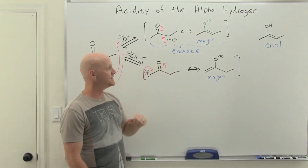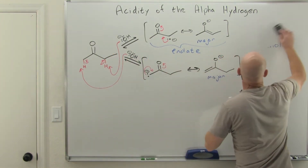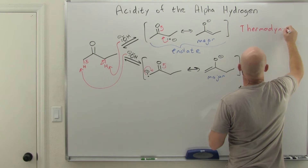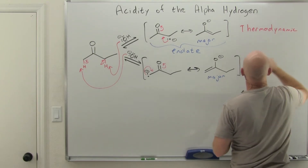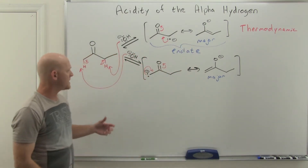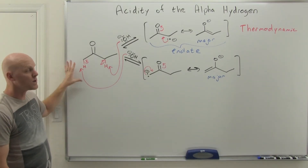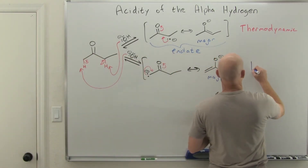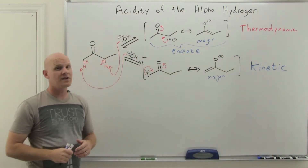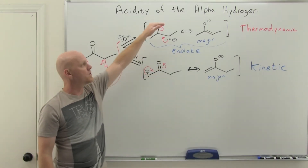The more stable enolate is referred to as the thermodynamic enolate. The less stable one — formed by deprotonating the more accessible alpha carbon — actually forms faster, so it's called the kinetic enolate. If you use a bulky base at low temperatures, you can often get the kinetic enolate to form preferentially over the thermodynamic one. We'll take a focus on this when comparing aldehydes, ketones, esters, and a special beta diketone.